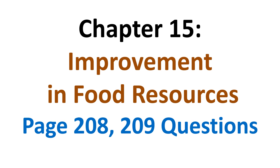Welcome dear students. This is NCERT ninth science book, chapter number 15: Improvement in Food Resources. We are going to do three in-text questions from inside the chapter — page number 208 has one question and page number 209 has two questions. Listen carefully, pause the video when required, note down the answers, and later practice writing all these answers on your own.